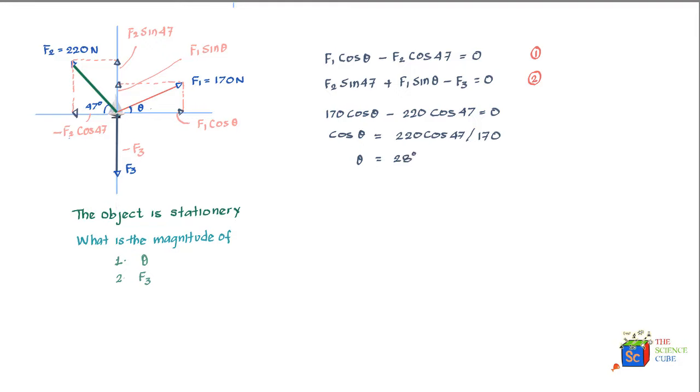Now we'll solve for the second equation. We again substitute the values. What we get is 220 sin 47 plus 170 sin theta. We now know that theta is equal to 28 degrees, so we'll put the value 28 minus F3 should equal zero. Therefore F3 is equal to 220 sin 47 plus 170 sin 28. If you calculate this by taking the respective sine values of 47 and 28 degrees, what you get is F3 is equal to about 240 Newton.